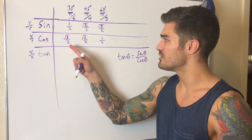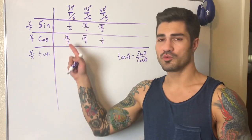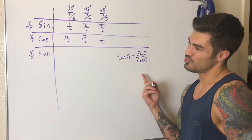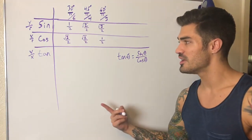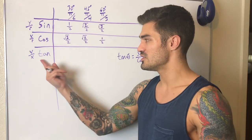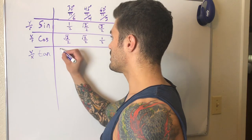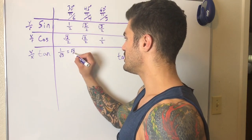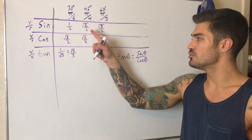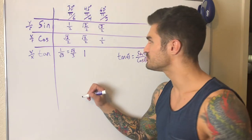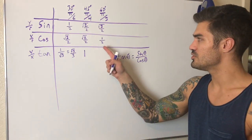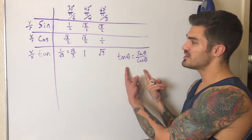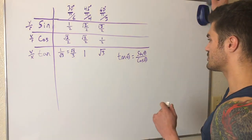For tangent of 30°, we get 1 over √3. When we rationalize the denominator by multiplying by √3/√3, we get √3/3. For tangent of 45°, we get √2/√2 which is just 1. For tangent of 60°, we get √3/1 which is just √3. Either way — using identities or using definitions — both approaches work.